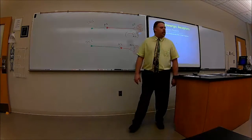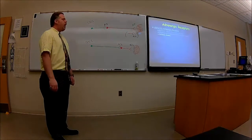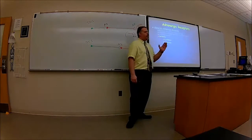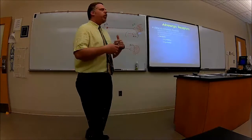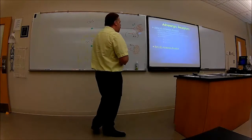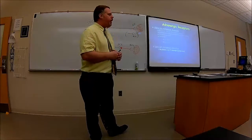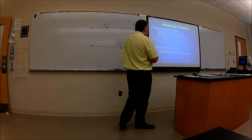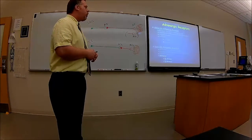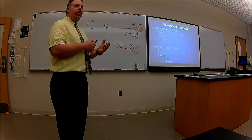Alpha receptors have norepinephrine or epinephrine bind to them, and the effect is usually excitatory. There are subtypes alpha 1 and alpha 2. For beta receptors, the mechanism also works by this cascade of events, and norepinephrine and epinephrine bind to these — it's usually inhibitory. We have beta 1 and beta 2 subtypes, with corresponding blockers and stimulants available.